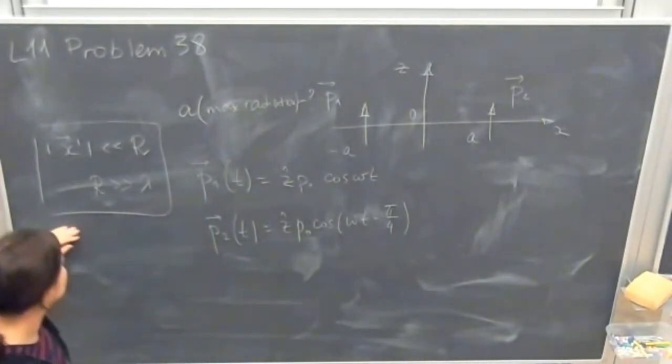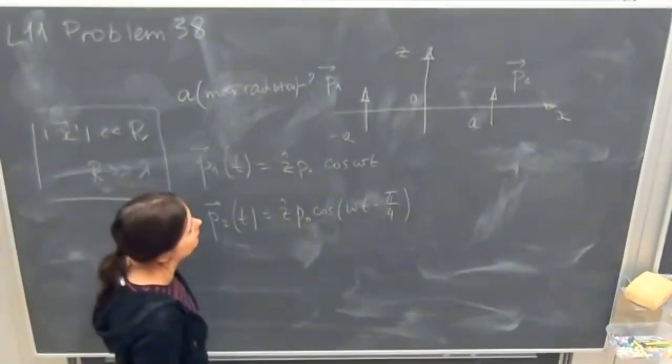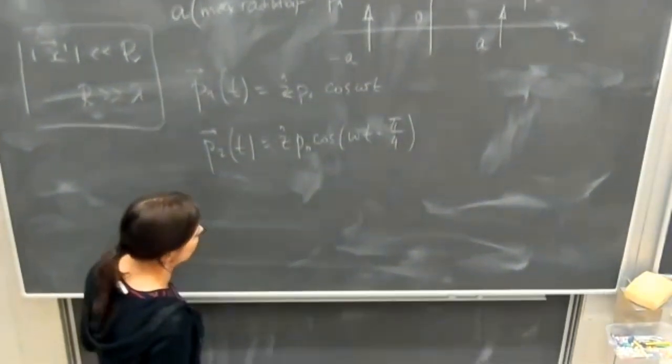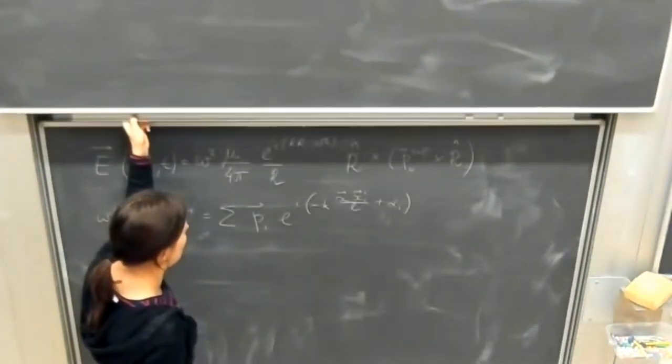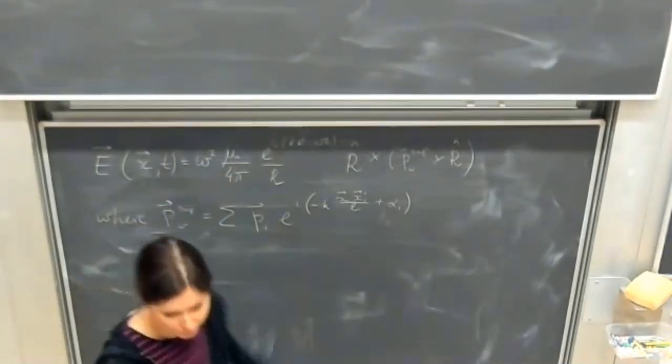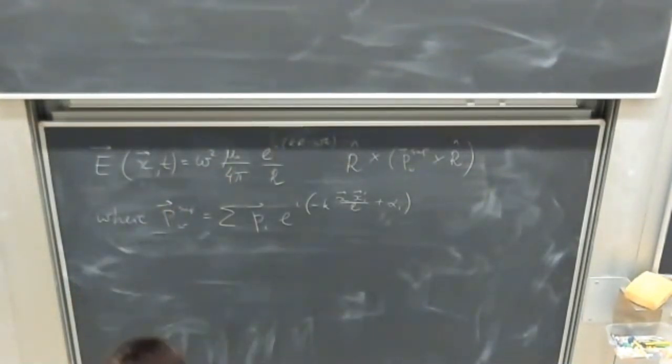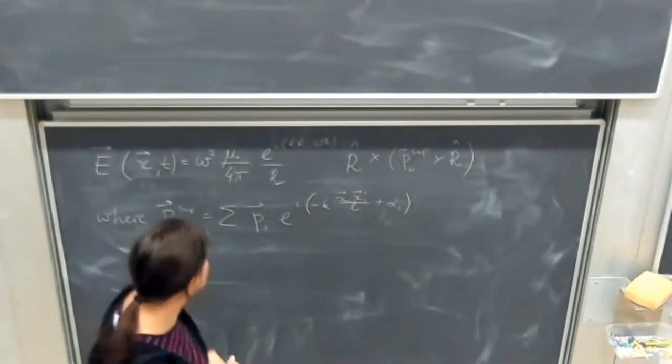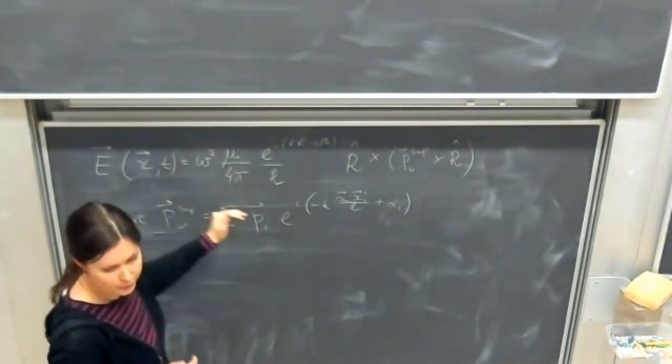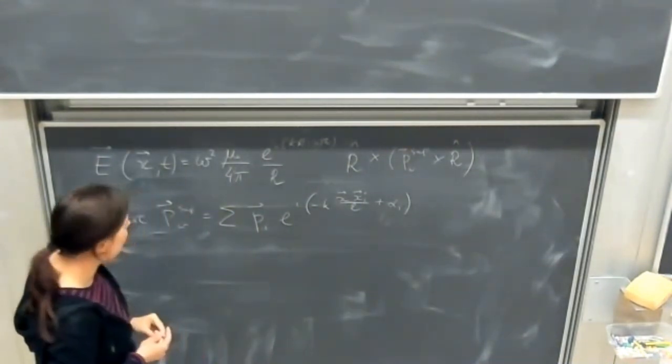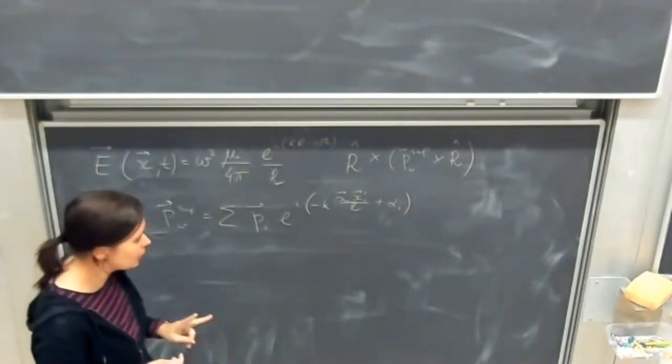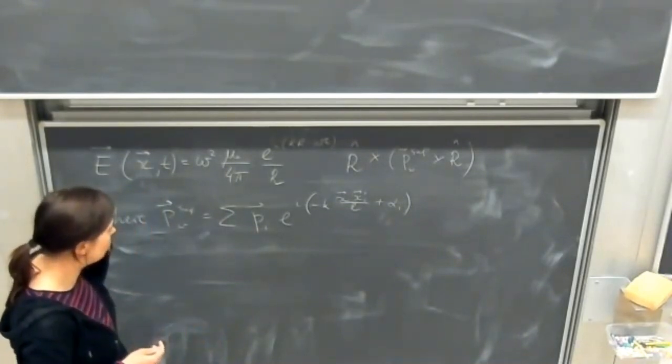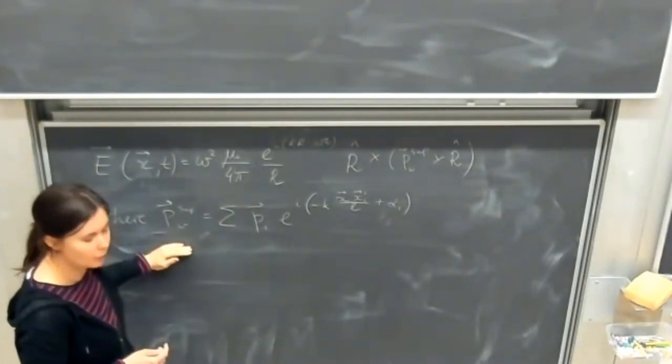And again this is the conditions for the radiation zone. These are equations from the pink pages, from the one before last page. There is given electric field we already used it before, and here we have two dipoles so we will need to use a superposition of these dipole moments.